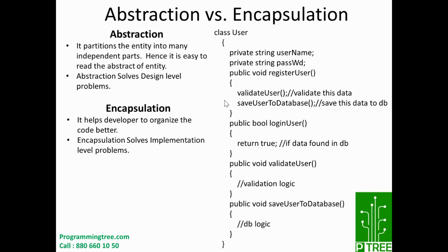Let's get started with abstraction and encapsulation. Abstraction partitions the entity into many independent parts, making it easy to read. For example, the User class has member variables username and password, and operations like register user, login user, validate user, and save user to database. The whole entity is partitioned so that it is very easily readable — this is what the point of partitioning in abstraction means.